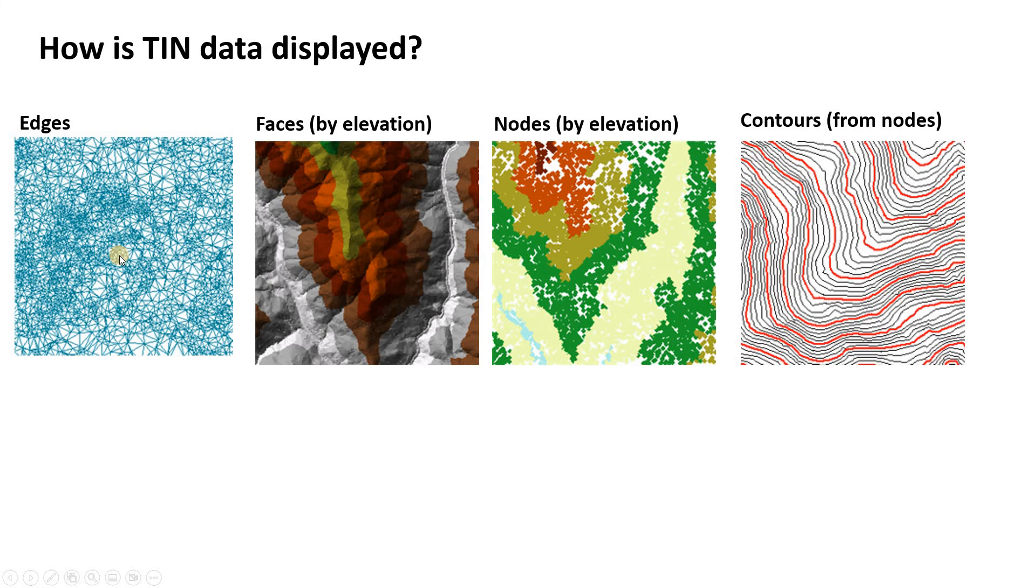And finally, I'll just say something about how TIN data is displayed. ArcGIS or other softwares often can display this in different ways. You can visualize the edges as a bunch of lines. You can visualize the faces as essentially colored panels that are colored by the mean elevation of the triangular panel. In this case, we have some hill shade applied as well. Or you can visualize the nodes themselves essentially as a point data set. This is just a bunch of those node points colored by elevation here, or we can contour those node points.